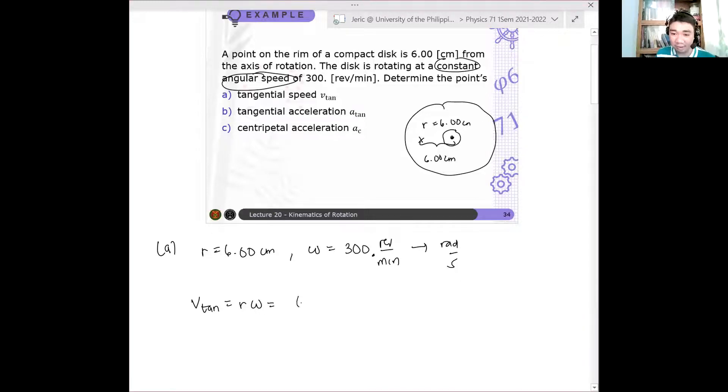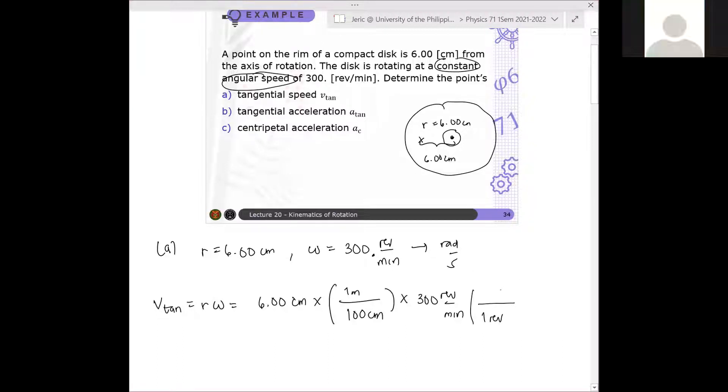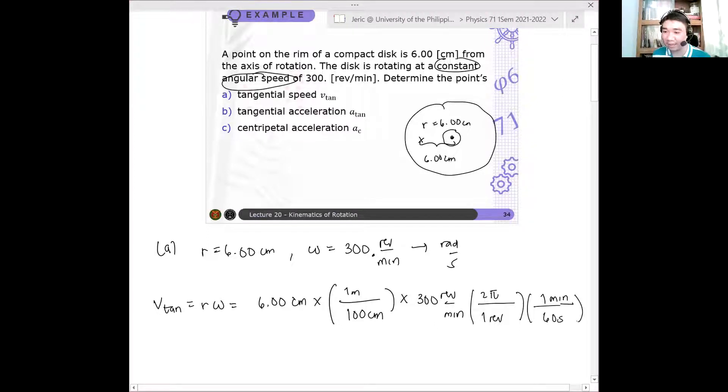You can't just remove the revolutions yet. So what happens is you have 6.00 cm times - we know that 100 cm is 1 meter - so I have 1 meter here. And then I multiply this by 300 revolutions per minute. The hassle in this topic is conversion, honestly. But the formulas are easy. So 300 revolutions per minute multiplied by - how many radians are there in one revolution? So you have revolution in the numerator or revolution in the denominator. How many radians are there in one revolution? Two pi radians. Two pi radians. This should be two pi radians in one revolution. And then the minute, convert that into seconds. So I have a minute in the denominator, therefore I need a minute in the numerator, and I have 60 seconds in the denominator.